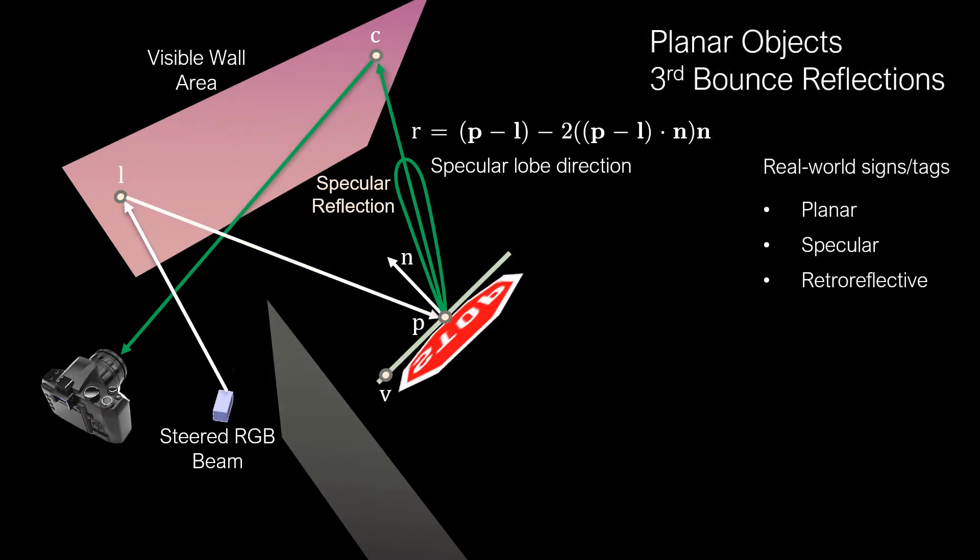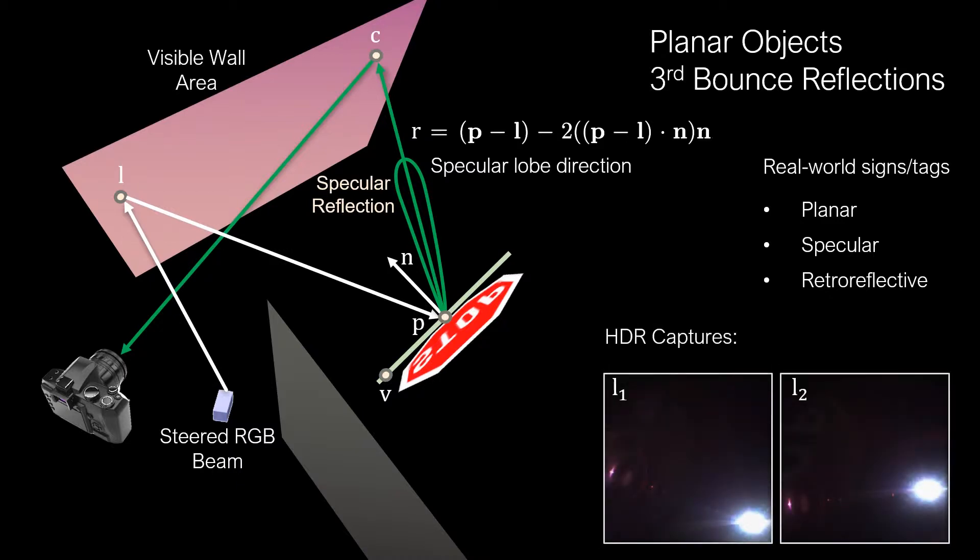Now for the special case of a planar object, such as the stop sign, the normal and object point can be encoded in only a few degrees of freedom, which we can recover from captures of the faint specular reflections shown here in the bottom right.